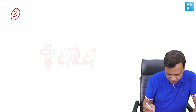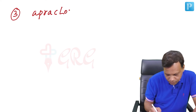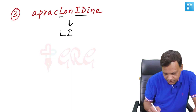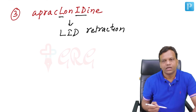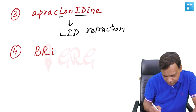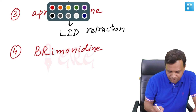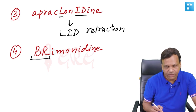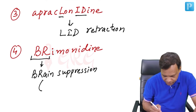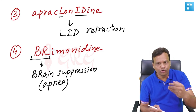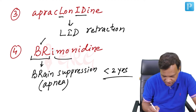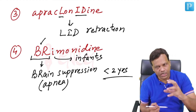Apraclonidine causes lid retraction — that is the important side effect of apraclonidine. Another similar drug, brimonidine, causes CNS or brain suppression. Both apraclonidine and brimonidine can cause this, but it is more important with brimonidine. Brain suppression leads to apnea, and the risk is higher in newborn babies — usually up to 2 years. So brimonidine is contraindicated in children less than 2 years. Remember: BR for brain suppression in infants.